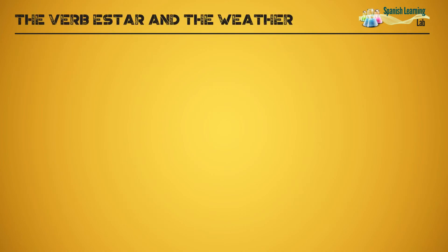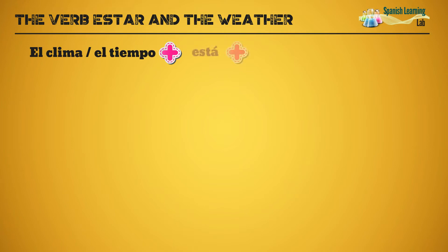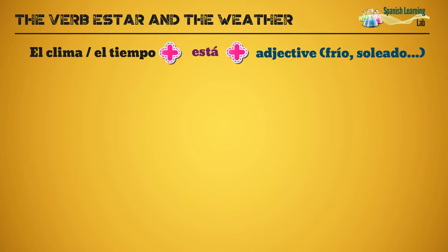The verb estar and the weather. The verb estar is probably the most useful when talking about the weather in Spanish, following this structure: el clima / el tiempo, plus está, plus an adjective about the weather. These weather adjectives would be words like soleado, nublado, frío, caliente, or lluvioso, among others — the ones that we presented before.